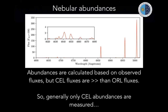First: nebular abundances. Abundances of ionized nebulae can be calculated using emission lines from the same chemical species but excited via different mechanisms. In this spectrum of a planetary nebula, there is emission from doubly ionized oxygen in collisionally excited lines at 5007 Å and 4959 Å, as well as recombination line emission at around 4640 Å. The fluxes between these two are massively different — the collisionally excited lines are always much brighter, so in most cases we measure abundances only using those.